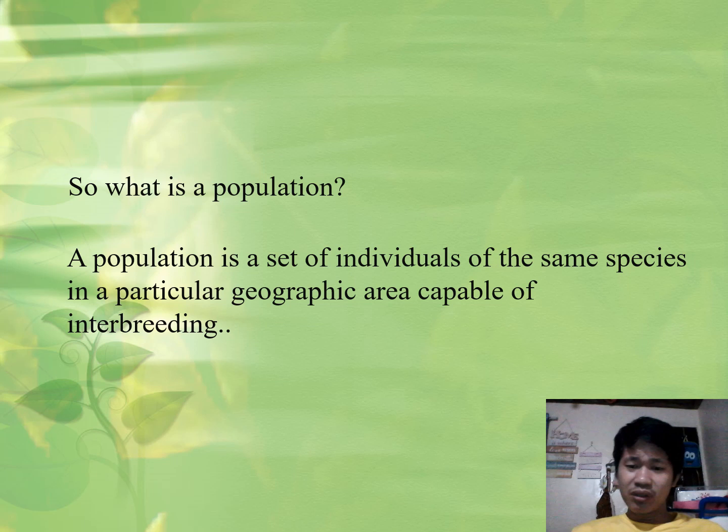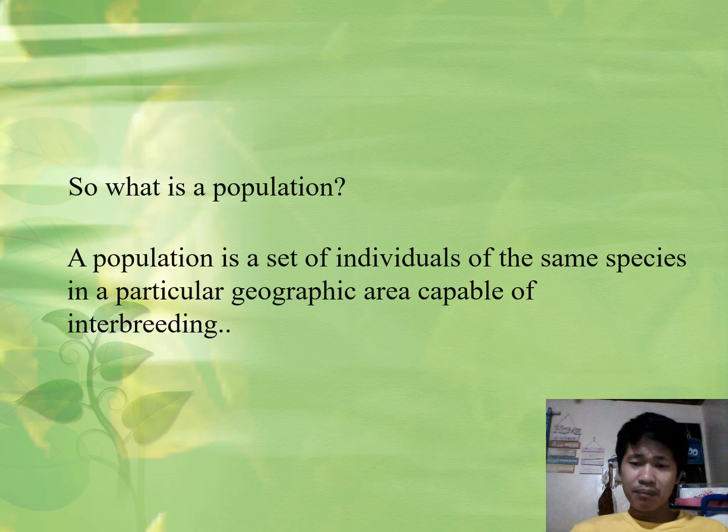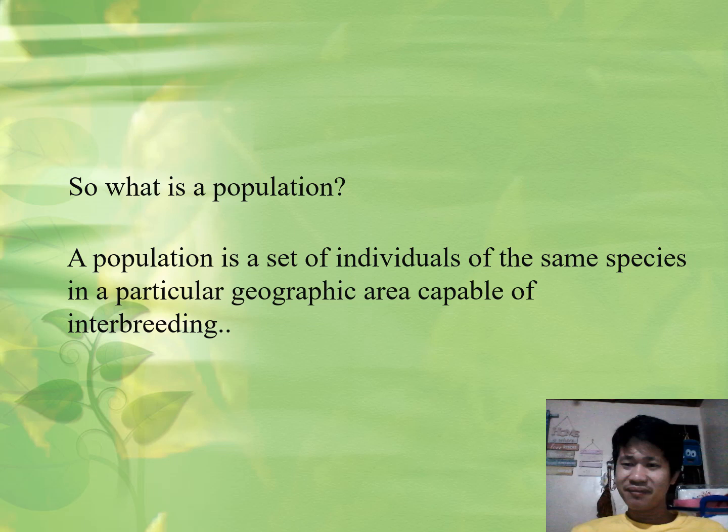A population is a set of individuals of the same species at a particular geographic area, capable of interbreeding. Same species — of course, different species cannot interbreed, although there are cases like hybrids, but those are unnatural in nature.